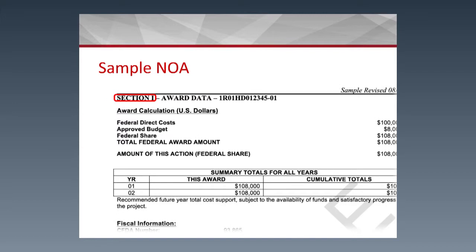Section 1 of the Notice of Grant Award includes budget information. It will indicate if you have any unobligated balance, if applicable — those are funds you didn't spend in prior years. For some awards, you need prior approval to use those funds. If you were in that category, you would submit a request; if approved for carryover, a revised award would be issued and it would show up in this section of the budget.